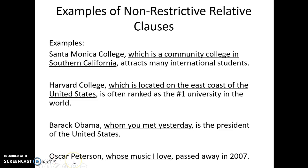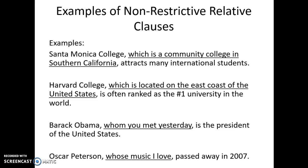And the last one: 'Oscar Peterson, whose music I love, passed away in 2007.' We have a possessive relative clause — 'whose music I love' — set off by commas because it's non-restrictive. We don't need the information in this relative clause for the sentence to make sense. We can very easily say 'Oscar Peterson passed away in 2007.' There's only one Oscar Peterson, who most people know as a famous musician, so we don't need this extra information — 'whose music I love.'